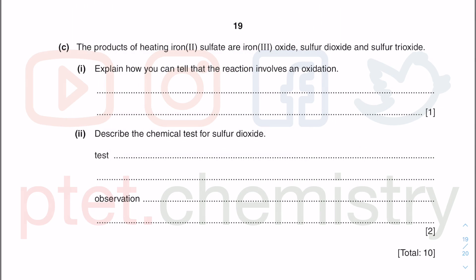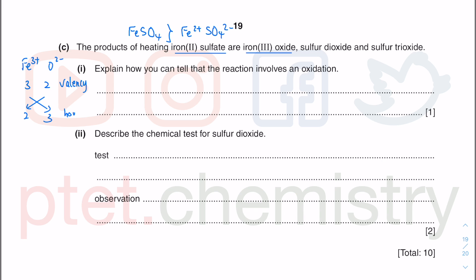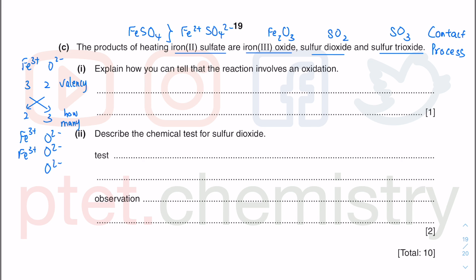Part C: the products of heating iron(II) sulfate, FeSO₄. Iron(III) oxide is Fe₂O₃ (using iron 3+ and O²⁻, with valency 3 and 2, crisscross gives 2 iron and 3 oxygen). Sulfur dioxide is SO₂ (1 sulfur, 2 oxygen). Sulfur trioxide is SO₃ (1 sulfur, 3 oxygen). You know SO₃ from the contact process, part of the CAST study in the syllabus, which is how sulfuric acid is made industrially.